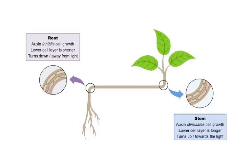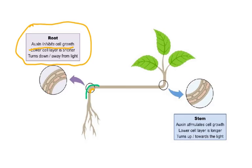The response in geotropism in the roots is important: you have to know the difference between the root and the shoot. In the root, auxin inhibits cell growth. So on the lower layer of the root, cells are shorter — this lower layer is shorter and the upper layer is longer. That is why the root curves downwards — auxin inhibits cell growth, so the side with more auxin grows less, and the other side grows more.